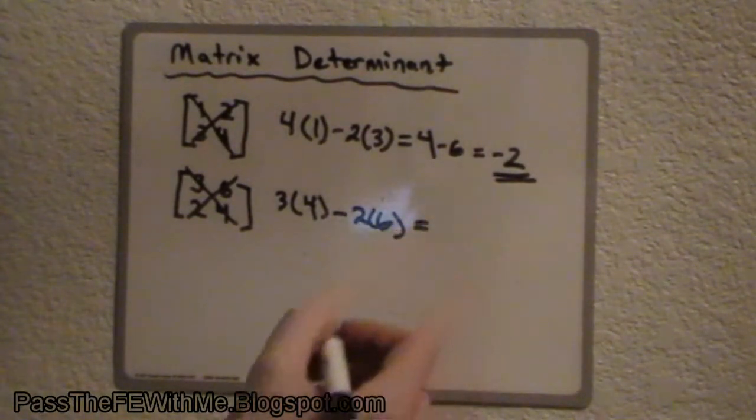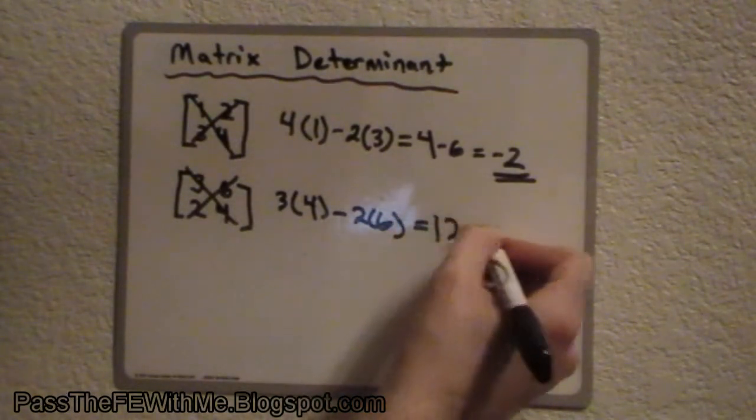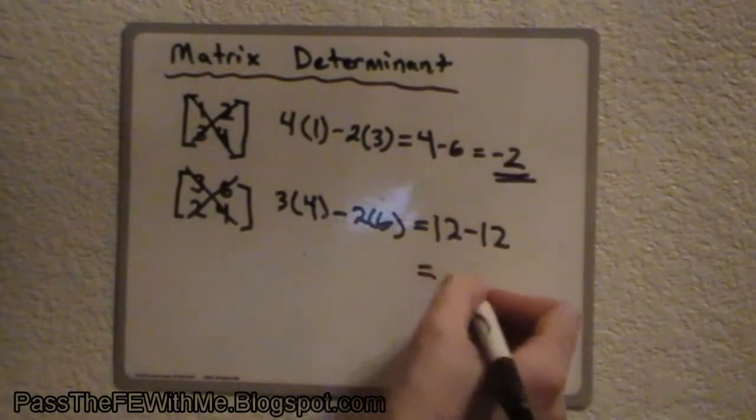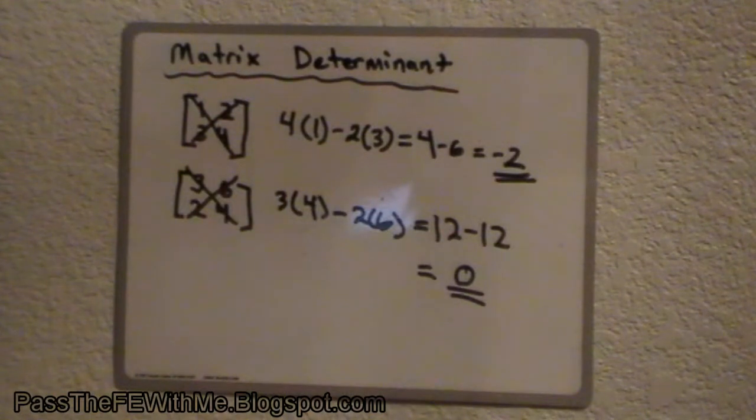And we can just say that equals 12 minus 12. Well, the answer to that one should be pretty obvious. The determinant of that matrix is 0. So, 2 by 2 is very simple.